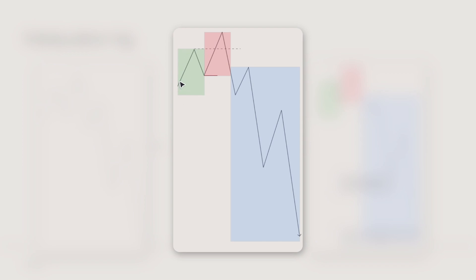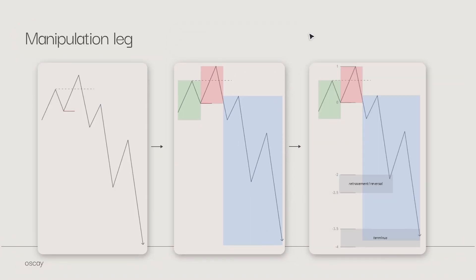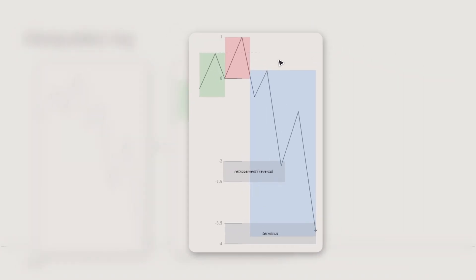I made it easier for you guys to understand — I put some nice little colors, like a little color book. The green is accumulation, so price can do whatever it wants here. Then we manipulate upwards, take out this high, displace down. This is the manipulation lag in red. And then right here, this is the distribution in blue. And then we put our Fibonacci from the top of the manipulation lag to the bottom, and project the deviation downwards.